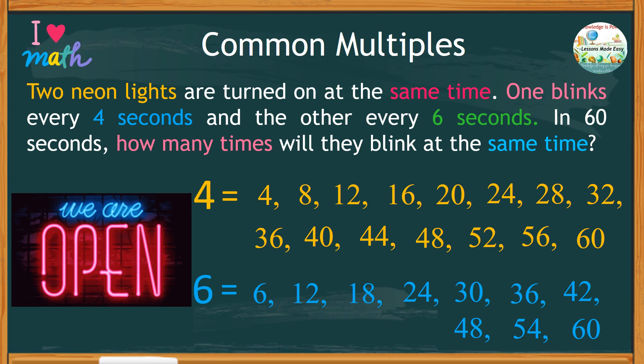This time, let's see what are the common multiples of 4 and 6. We have 12, 24, 36, 48, and 60.